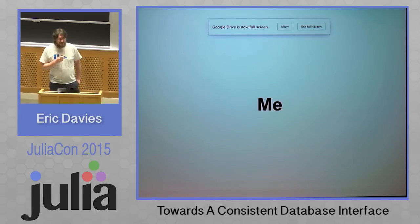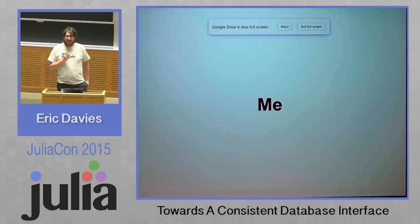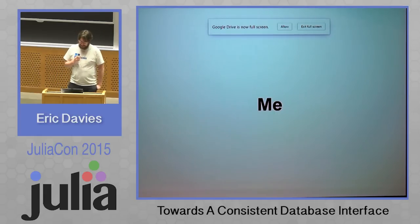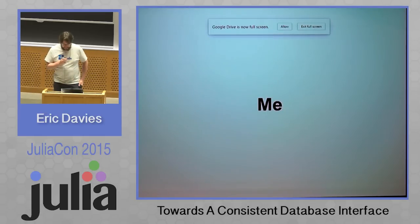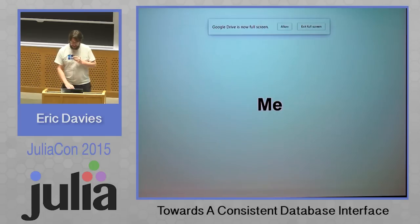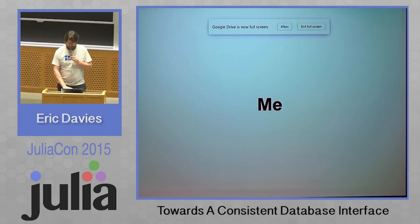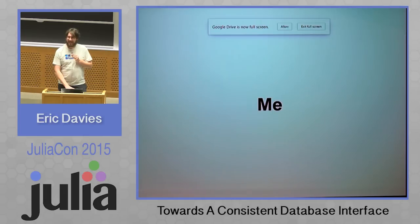Shout out to Isaiah Norton for making that easy, by the way — that clang.jl wrapper is great. The interface I'm working on right now is called dbapi.jl, which you probably haven't heard much about because I pushed it today.